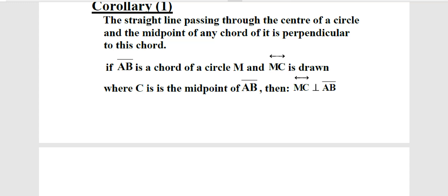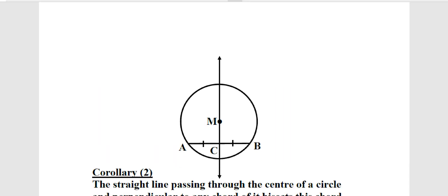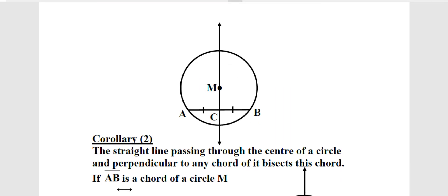Clarion number 1: The straight line passing through the center of a circle and the midpoint of any chord of it is perpendicular to this chord. Look at this figure. We have a straight line L passing through the center point and bisecting chord AB. Therefore it is perpendicular to AB. Any straight line passing through the center point of a circle that bisects a chord inside it is also perpendicular to that chord at its midpoint.